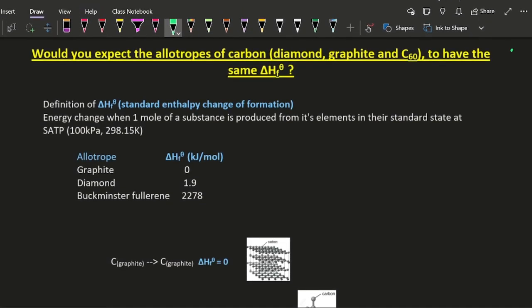So would you expect the allotropes of carbon - that's diamond, graphite, and C60 buckminsterfullerene - to have the same enthalpy change of formation in standard conditions?